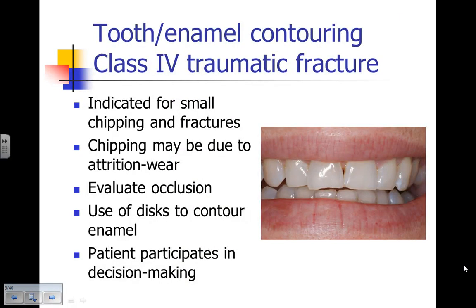Let's talk about tooth enamel contouring for the Class 4 traumatic fracture. For this patient who is unhappy with their smile, they have a small chip of the incisal edge. The chip may be due to a traumatic fracture, or it may be chipping due to attrition or wear. We need to evaluate the occlusion and see how it is going to impact upon our treatment.